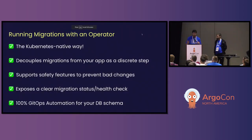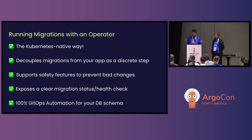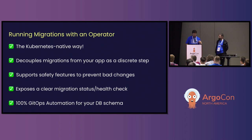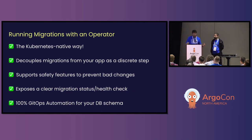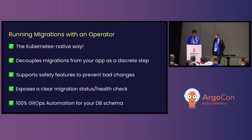Going back to our presentation, the advantages of running migrations with an operator: this is the Kubernetes-native way — we extend the API by adding new resources and writing controllers to manage them. It's super easy to decouple migrations from your app as a discrete step, as we've shown using SyncWaves. We have plenty of safety features to prevent bad changes from happening. The custom resources expose a clear API that you can consume with other tools, just like ArgoCD did for us, so you can build higher-order workflows on them. And in conclusion, it gives you 100% GitOps automation for your database schema.